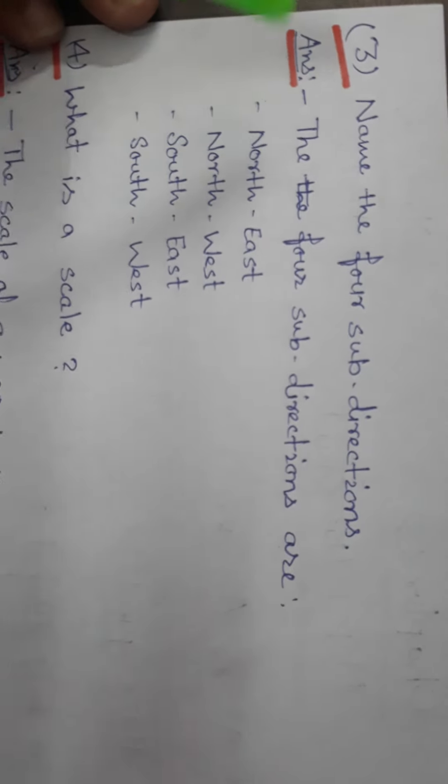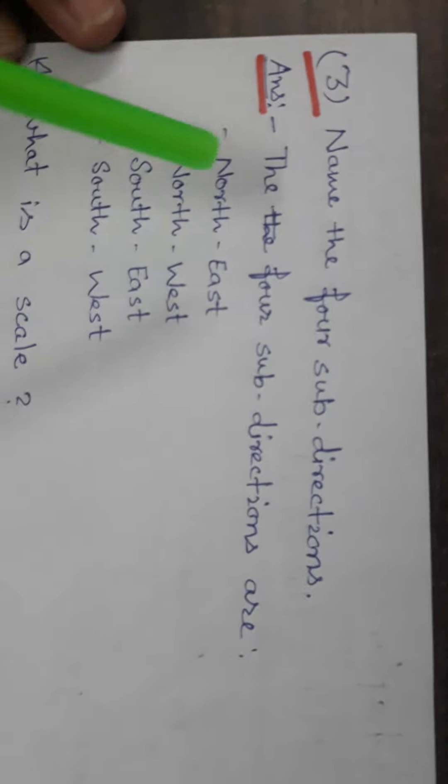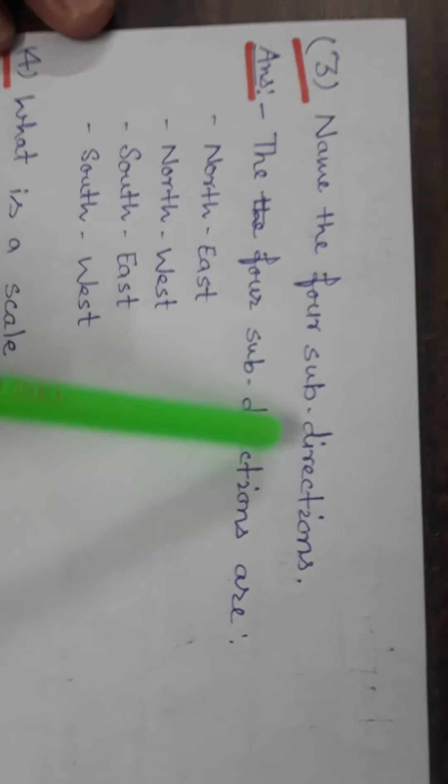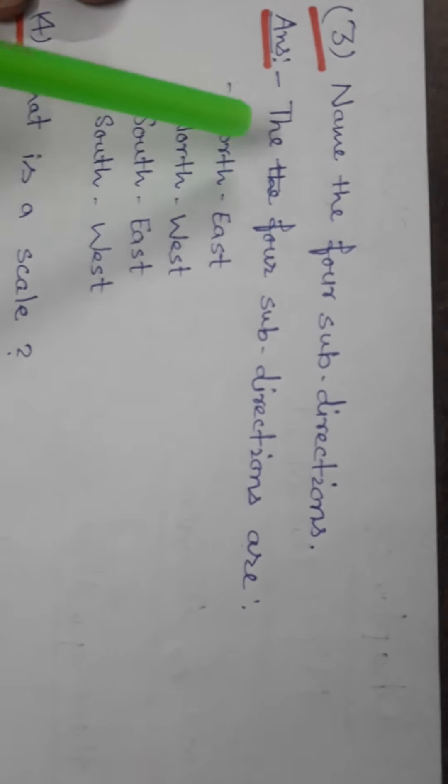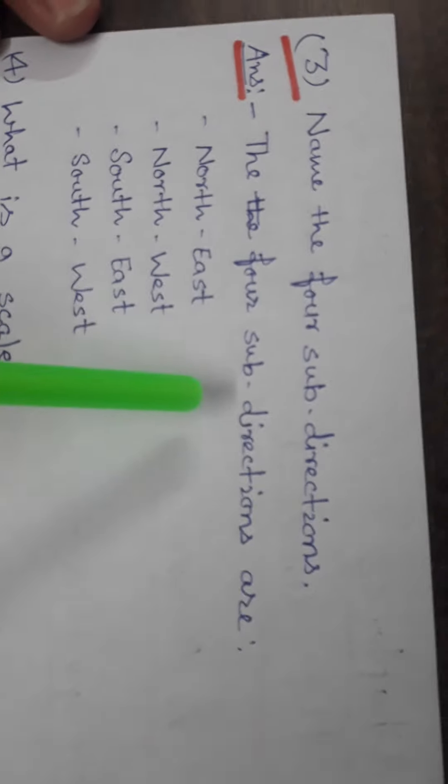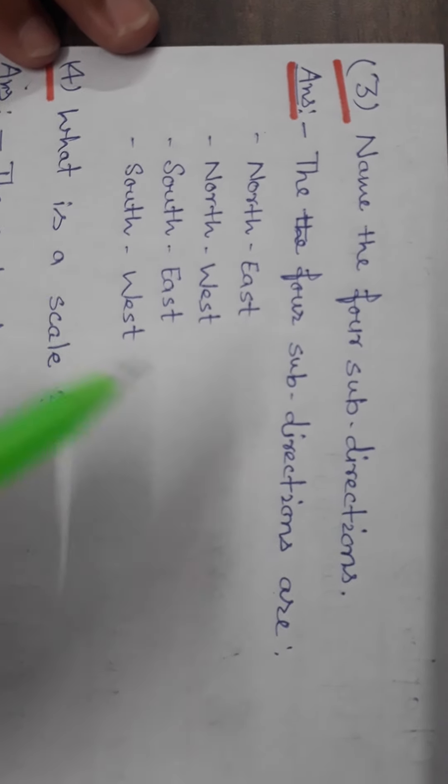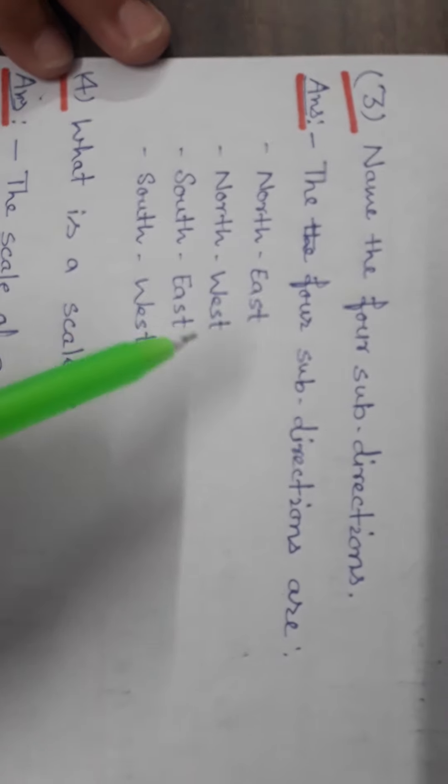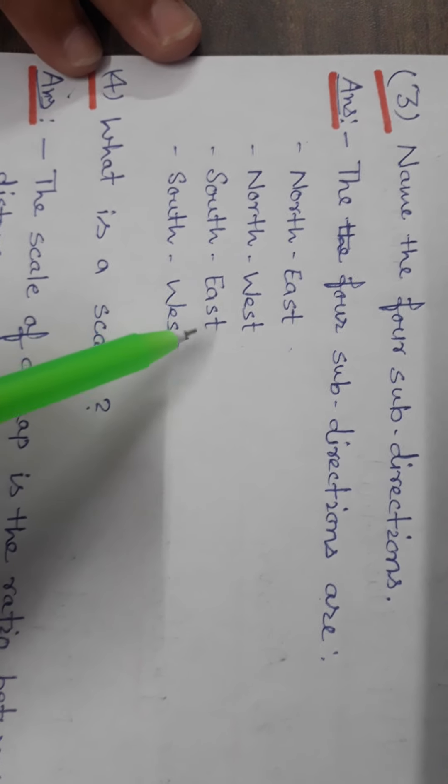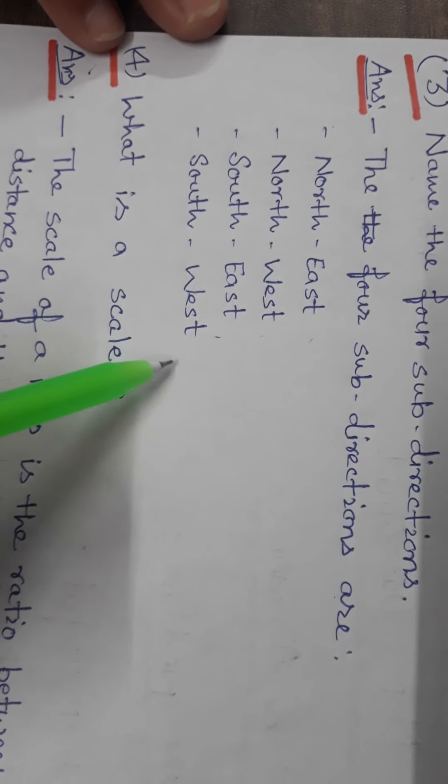Now, next question is, name the four subdirections. The four subdirections are first one is north-east, north-west, south-east, south-west.